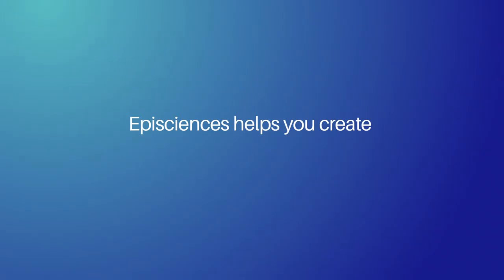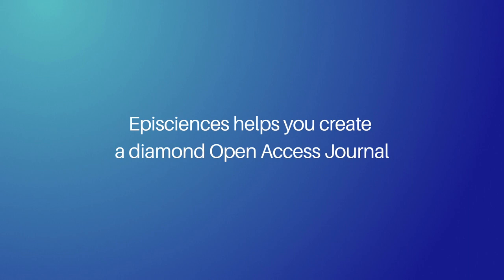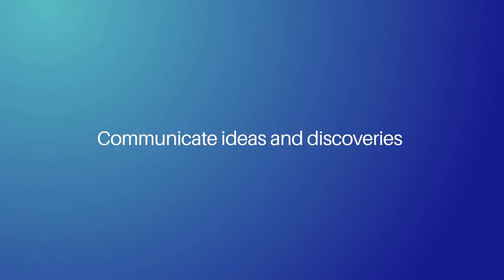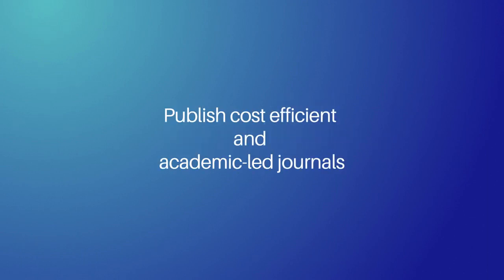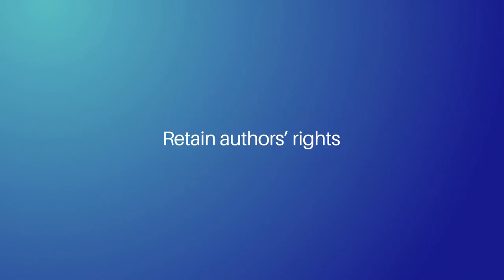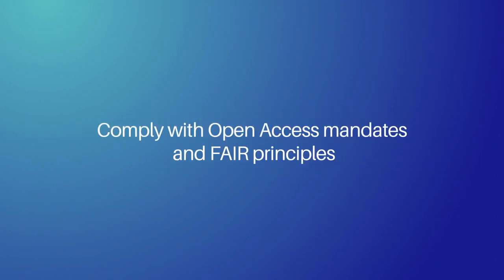Episciences helps you build a diamond open access journal for your research community: communicate ideas and discoveries early via preprints, receive community feedback at an early stage, publish free academic-led journals, retain rights by using Creative Commons licenses, and comply with open access mandates and FAIR principles.